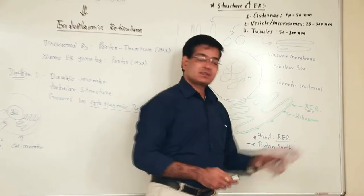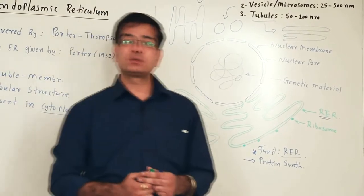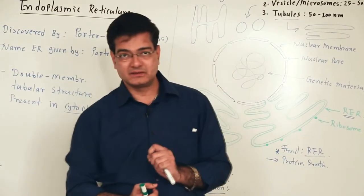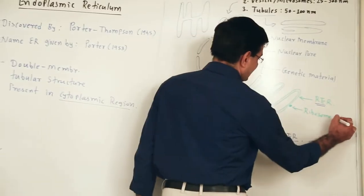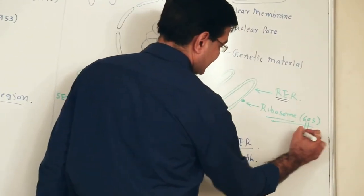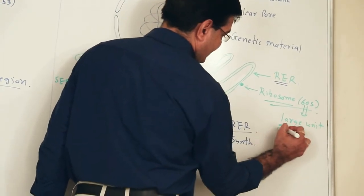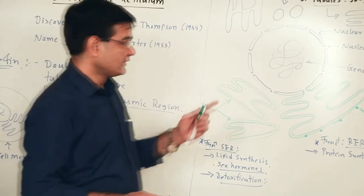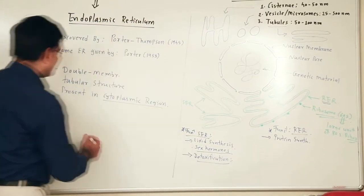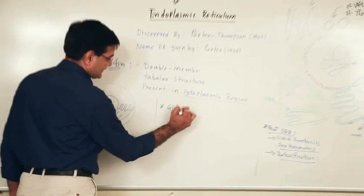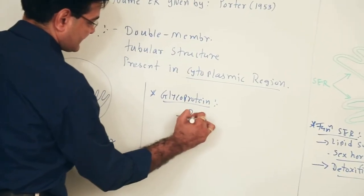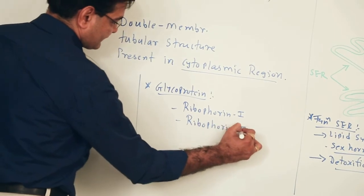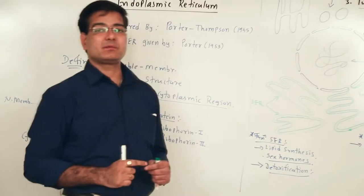The ribosomes attached on the rough endoplasmic reticulum are of the 80S type, found in eukaryotic organisms. Each ribosome has two units — large and small. In the case of RER, the 60S kind of ribosome, which is the large unit of the 80S ribosome, is found. This ribosome remains associated with the rough endoplasmic reticulum with the help of glycoproteins called ribophorin-1 and ribophorin-2, which help the ribosome bind to the surface of rough ER.